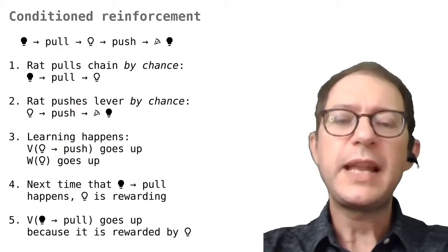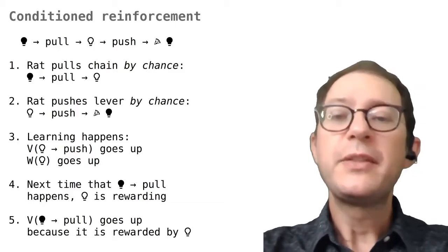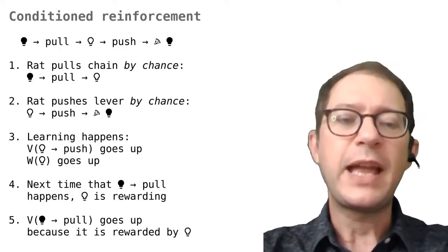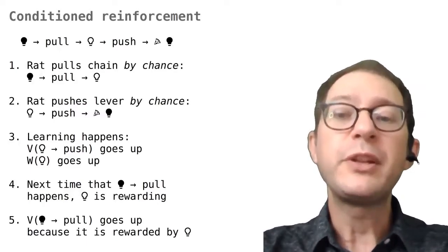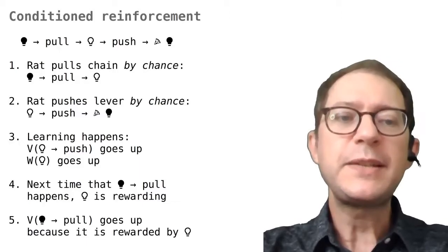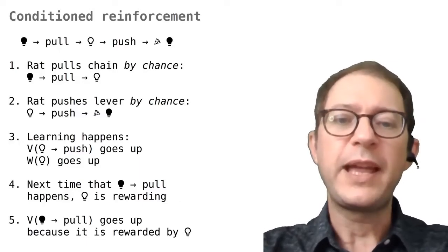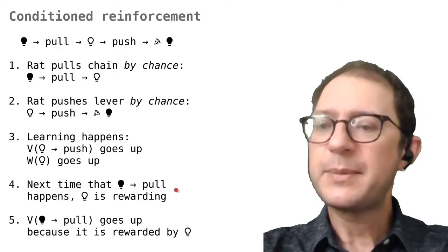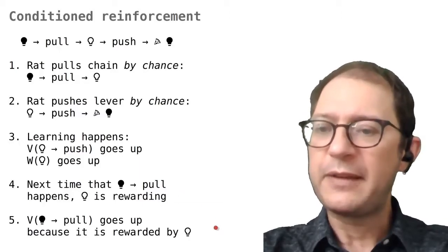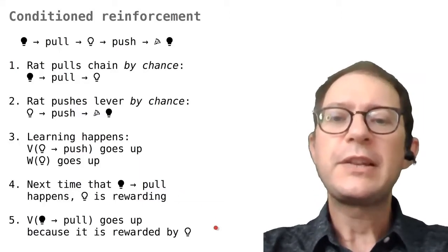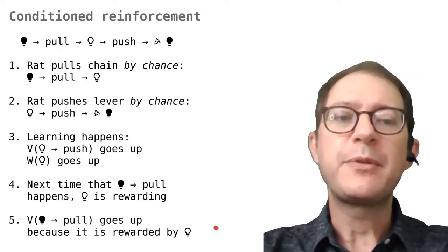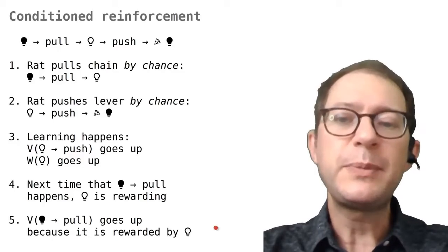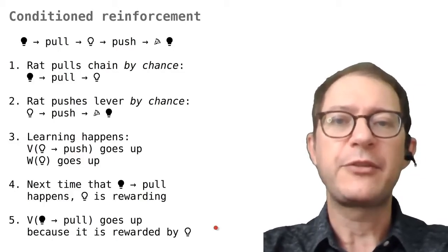So now seeing the light on is rewarding to the rat. This is great news, because the next time the rat pulls the chain by chance and turns the light on, it will feel a reward. This means the associative strength between the light off and pulling will go up a bit — summarized in points four and five — meaning that next time the rat will be more likely to pull the chain when the light is off.